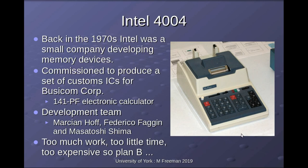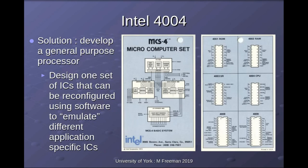To supplement their income, Intel took on custom IC work. A Japanese company approached them about developing a set of ASICs — application-specific integrated circuits — for their desktop calculator. The original design specs asked for three ASICs: one for keyboard interfacing, one for processing, and one to handle the paper printer. Intel only had two design engineers working on these ASICs, and there wasn't enough manpower to design all three chips in time. So they went to plan B: rather than designing three separate chips, they designed one chipset that could be reprogrammed in software to emulate the three different functionalities — and that's what they came up with: the first commercial microprocessor, the Intel 4004, a small 16-pin four-bit processor chip.